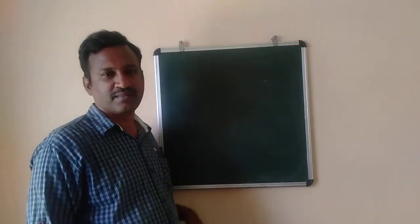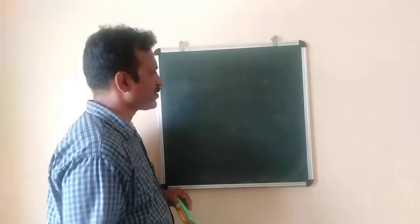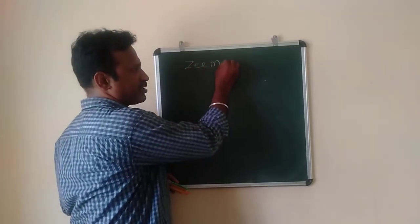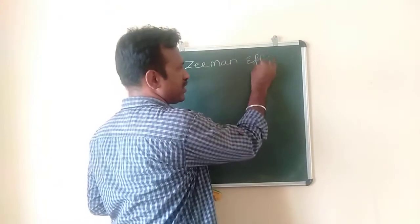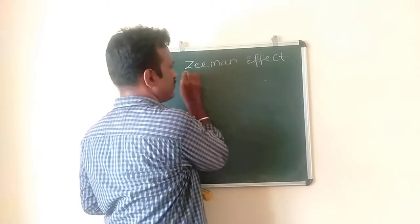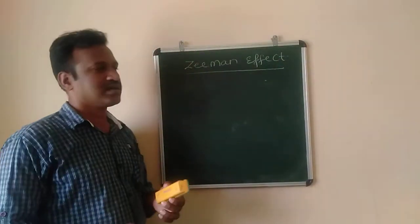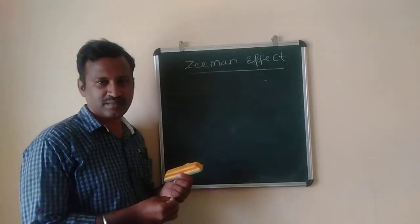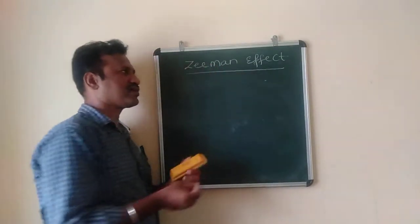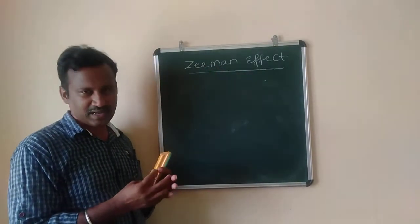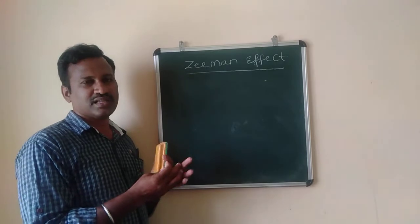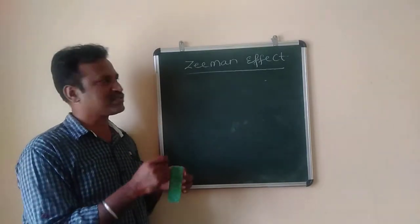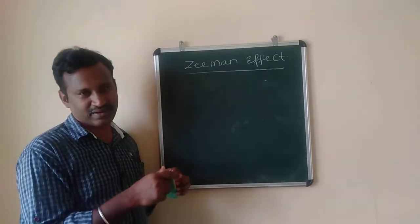Hello students, welcome back to the session. In this session we will be studying about what we mean by the Zeeman effect. As we discussed the failure of Bohr's atomic model, the Zeeman effect is nothing but the splitting up of spectral lines in the presence of a magnetic field.